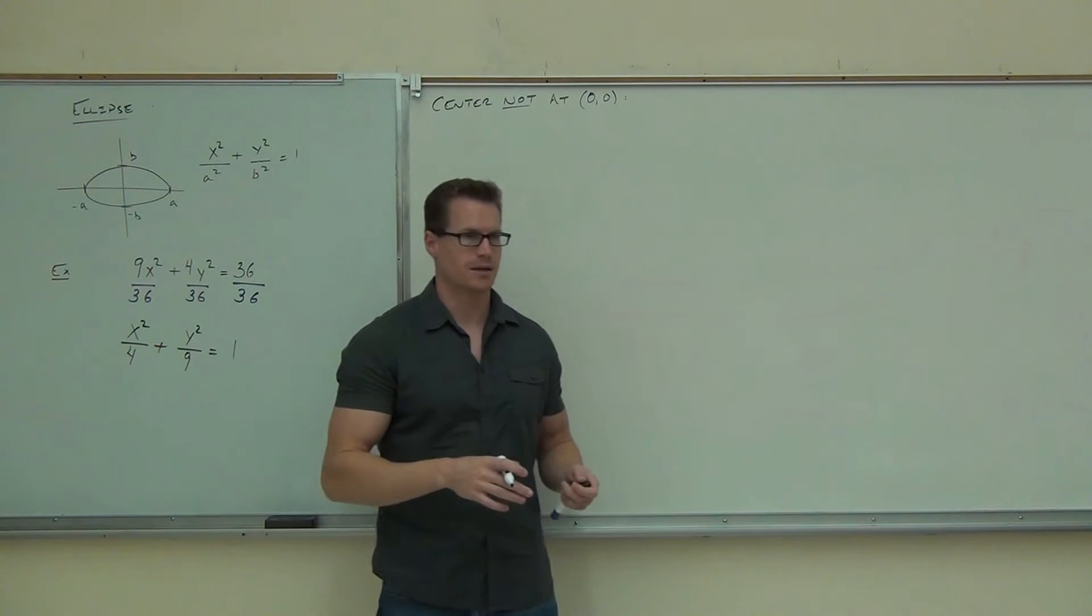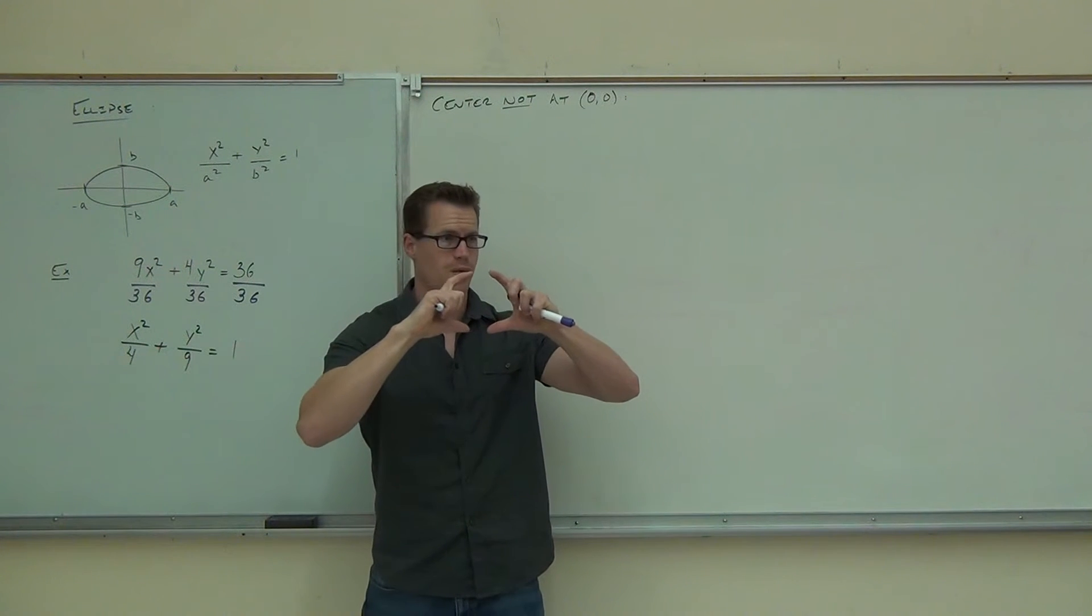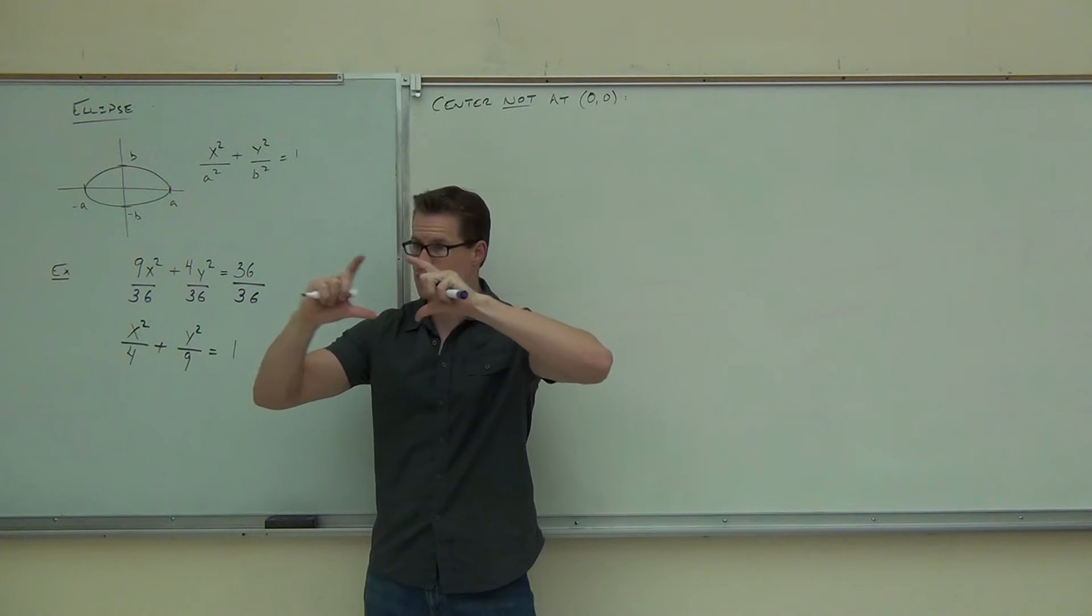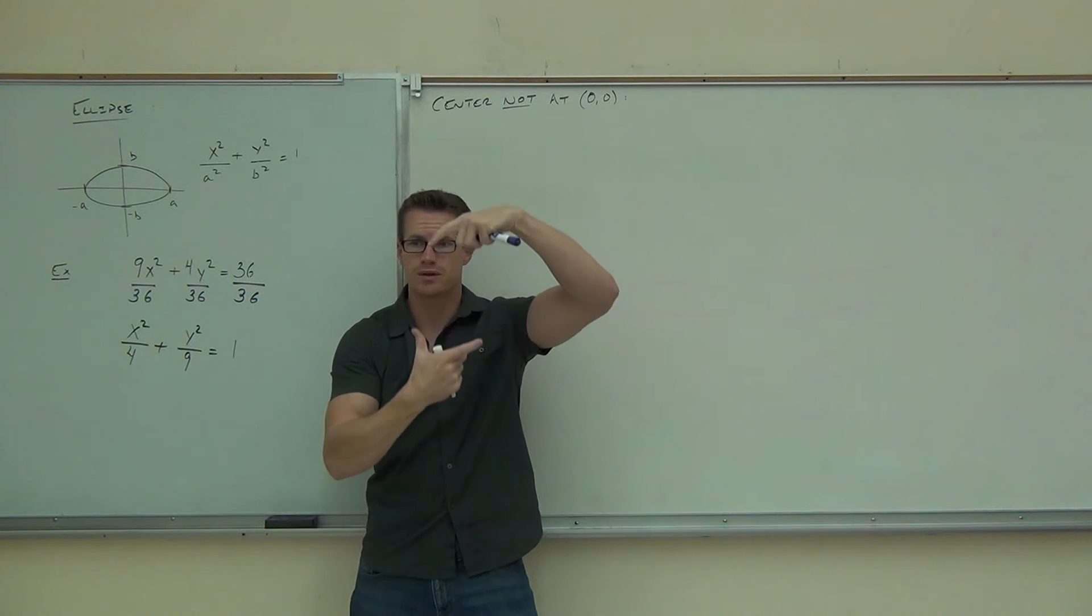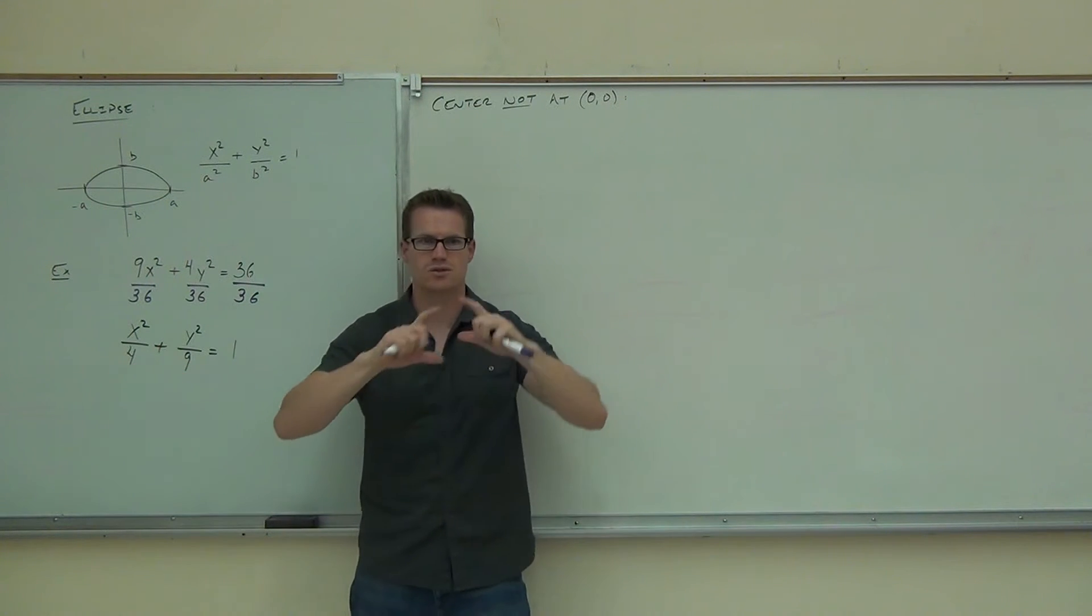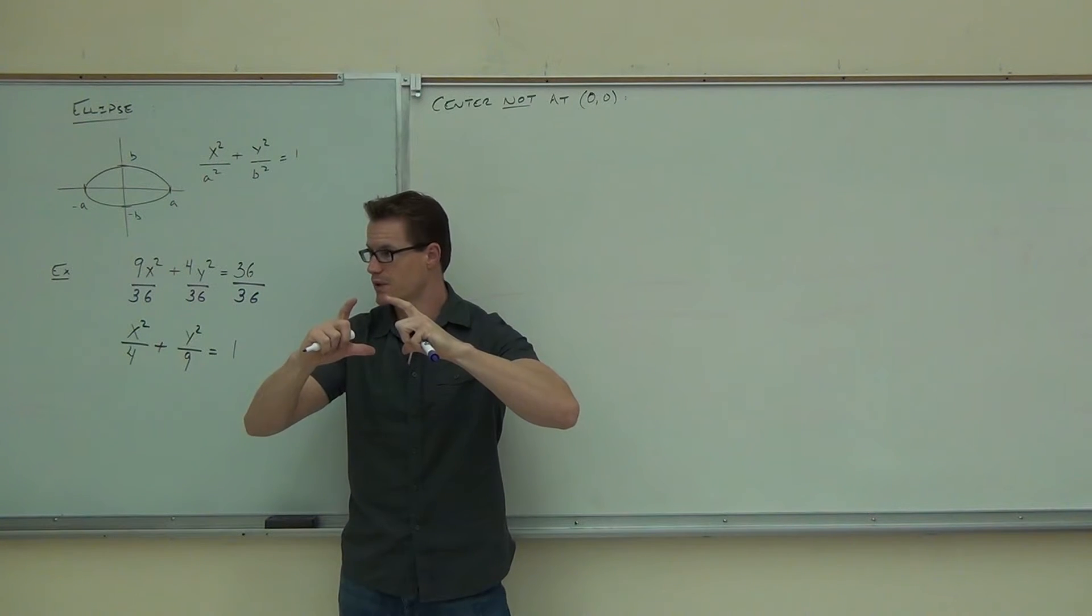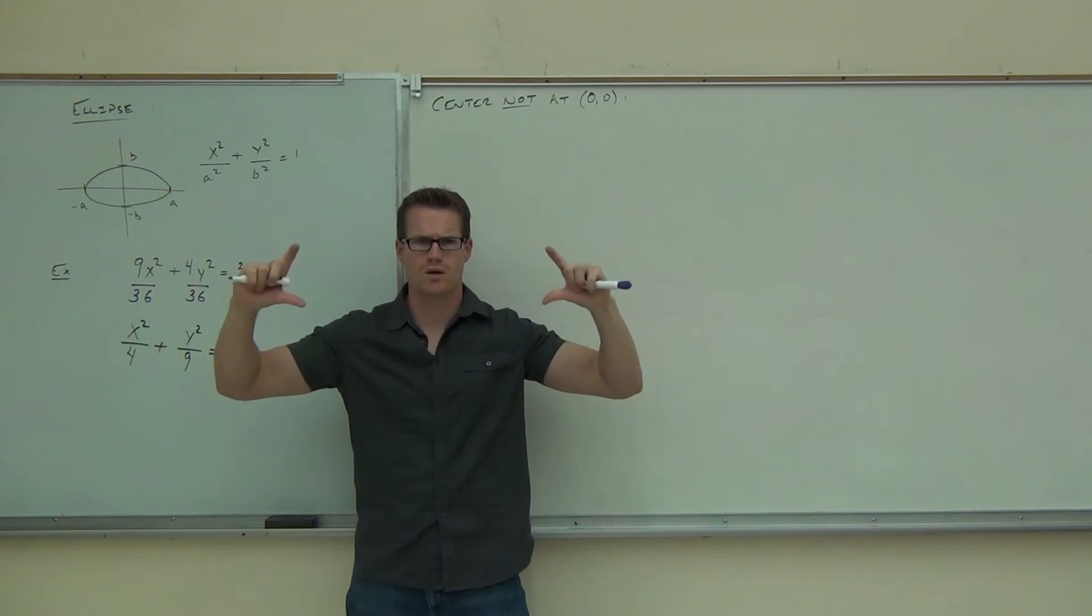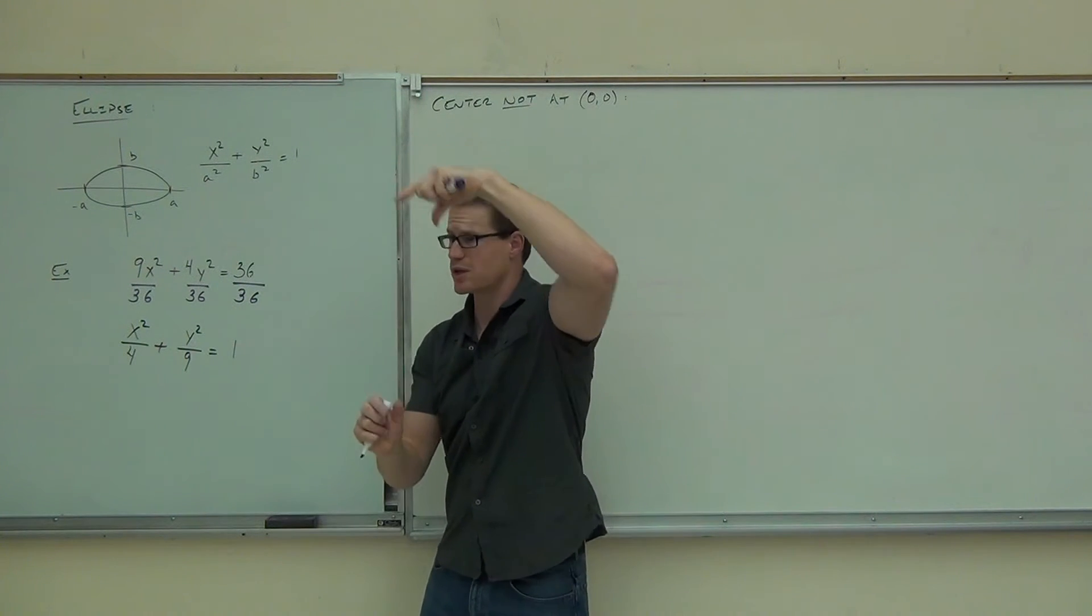So divide it by 36, hopefully you're able to simplify these fractions. What's this fraction become? 9x squared over 36. How much do we get out of that? x squared over 4. What do we get out of the next fraction? y squared over 9. Equals 1. That's clearly an ellipse. We're looking at x squared plus y squared, that tells us we're some sort of circular figure. We're either a circle or an ellipse.